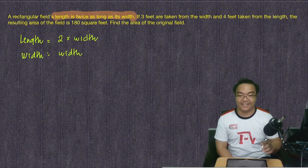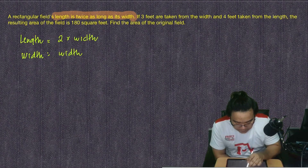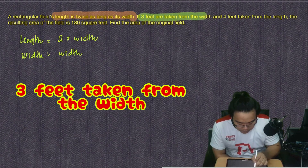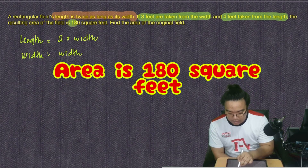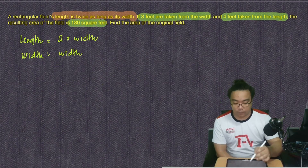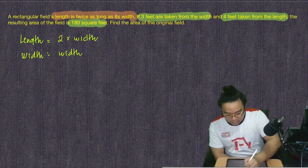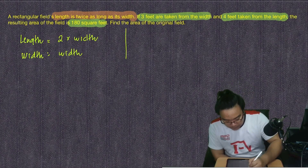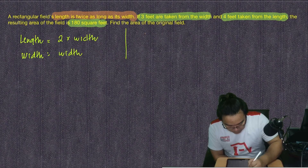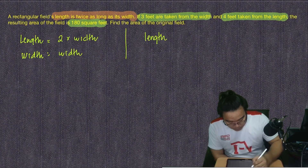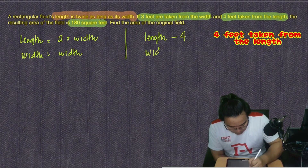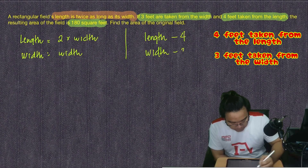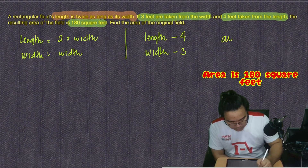Next, if three feet are taken from the width and four feet are taken from the length, then the new area is 180 square feet. So if the length is deducted by 4 feet and the width is deducted by 3 feet, the area will be 180 square feet.